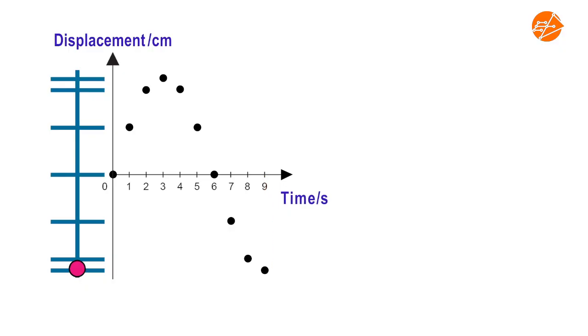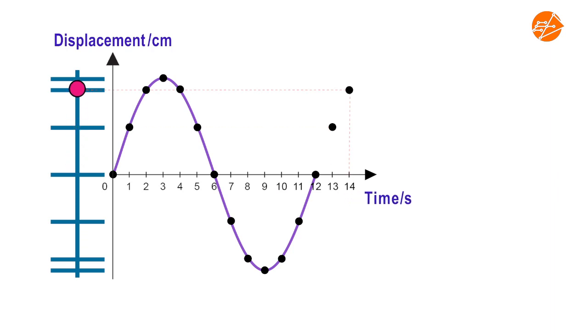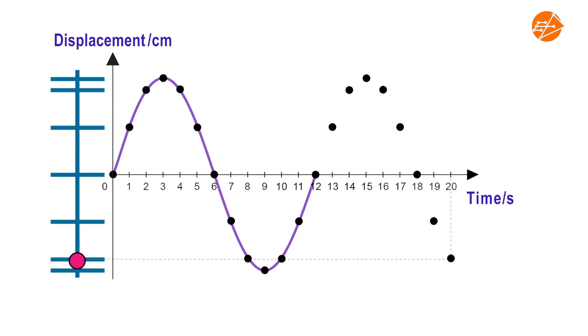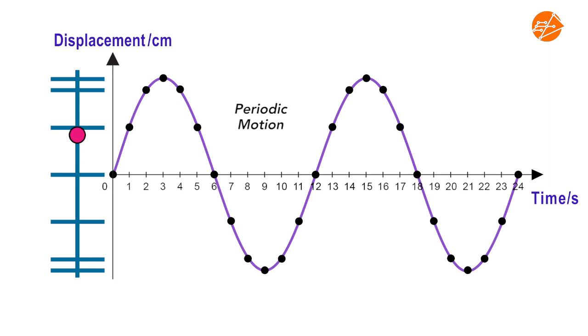What do you think the displacement-time graph will look like in the next 12 seconds? Well, the motion of the particle repeats in the next 12 seconds. In physics, this repeated motion in equal intervals of time is known as a periodic motion.